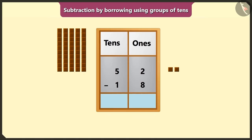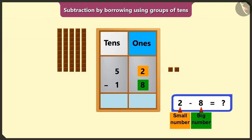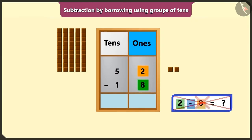So first of all, we will perform subtraction of the numbers in the box of ones. But here, 2 is smaller number compared to 8. So how can we subtract big number from a small number? We cannot subtract a big number from a smaller number.